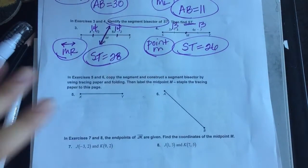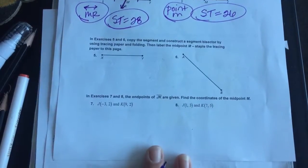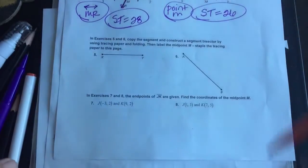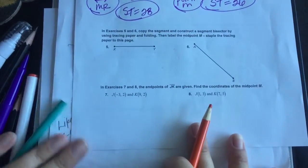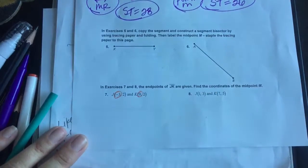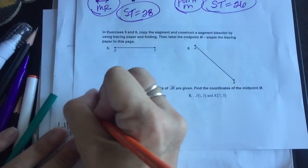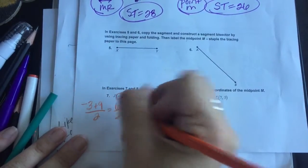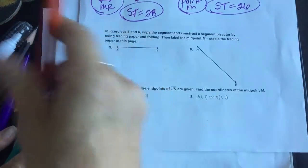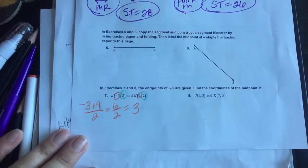For numbers seven and eight, I need some color to separate my x's and y's. This is a matter of finding midpoints, so we have to average the x values. The average of the x's: negative 3 plus 9 divided by 2 is 6 divided by 2, so the average of the x's is 3. Then for the y's, the average of 2 and 2 is 2.